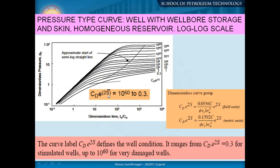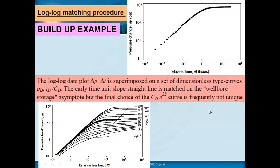This is your plotted graph in pressure change versus elapsed time delta-t, and this is your type curve. Manually, you can do this with transparent graph paper to understand what is happening. In the computer — Excel or otherwise — you take what you have plotted and you must match it. The log-log data plot of delta-P versus delta-t is superimposed on a set of dimensionless type curves. Depending on your system or situation, you get a set of type curves, plot delta-P versus delta-t, and superimpose them to understand how the line fits both the straight-line and curve portions.